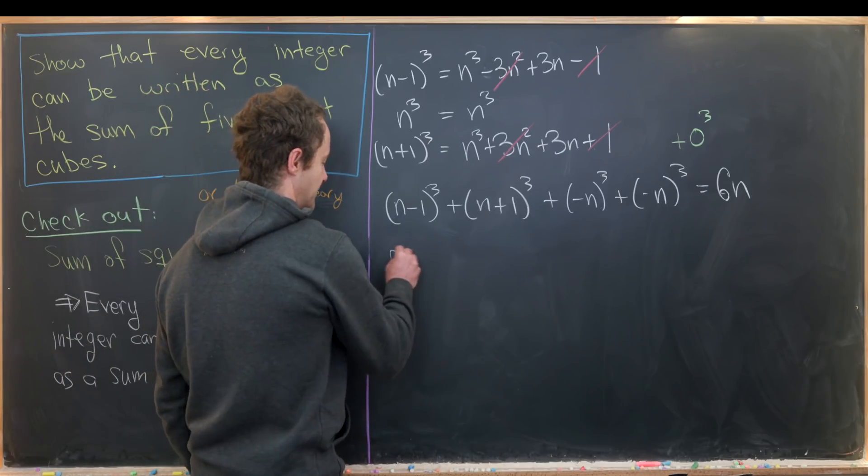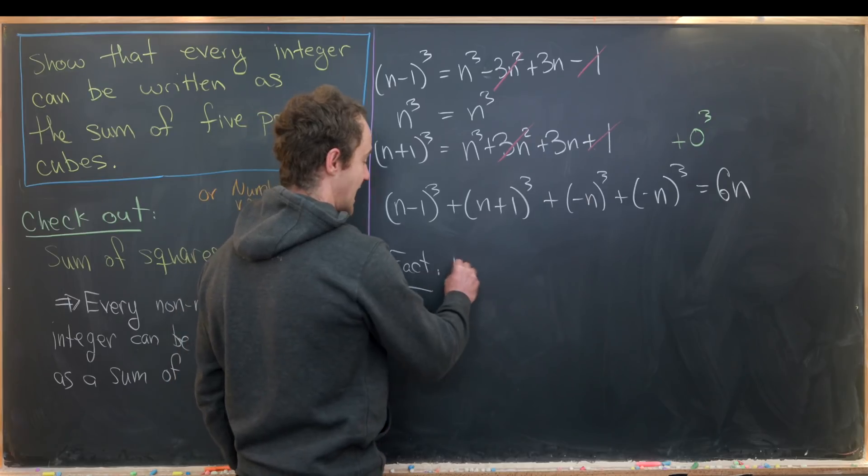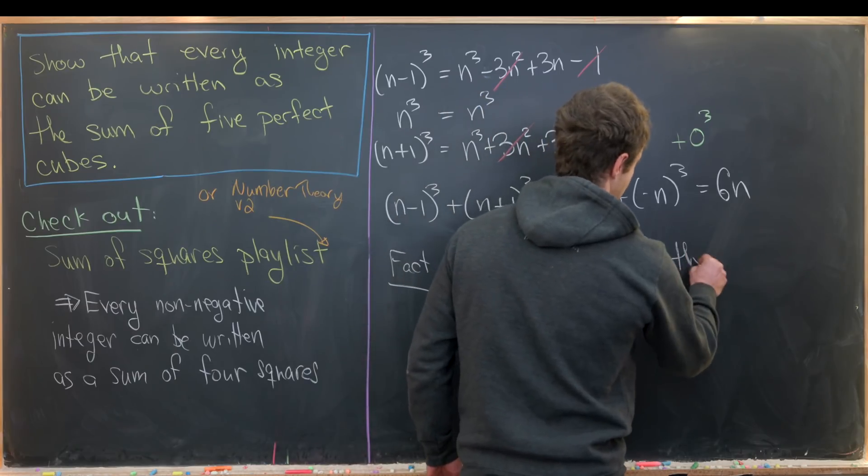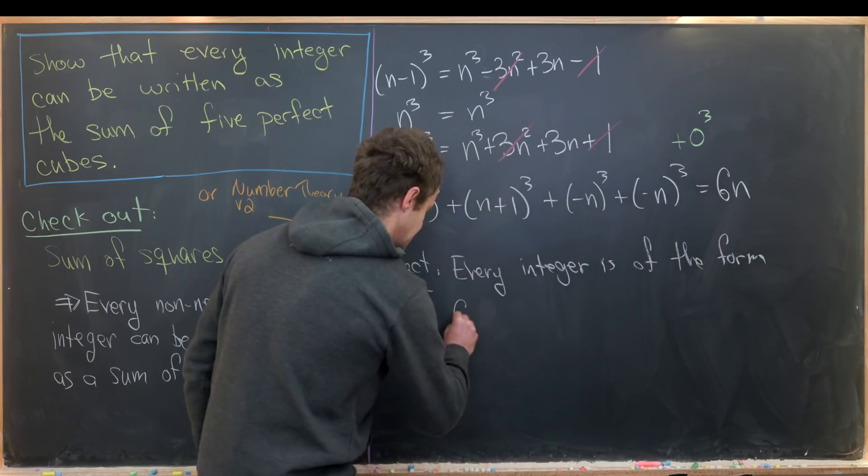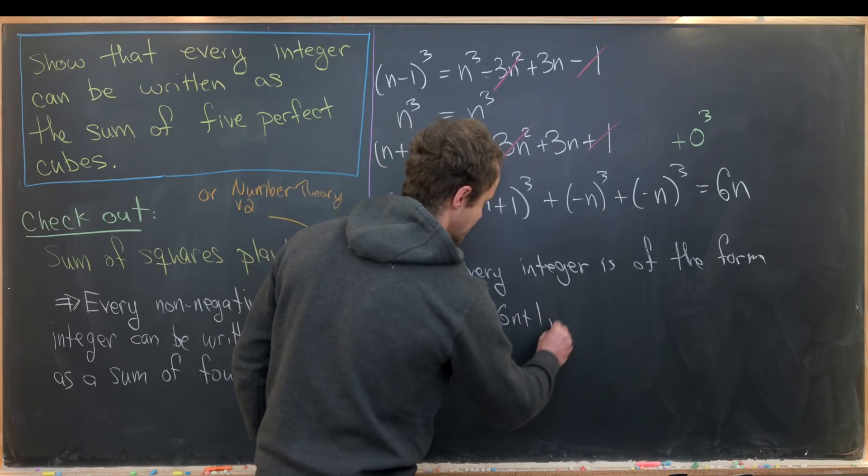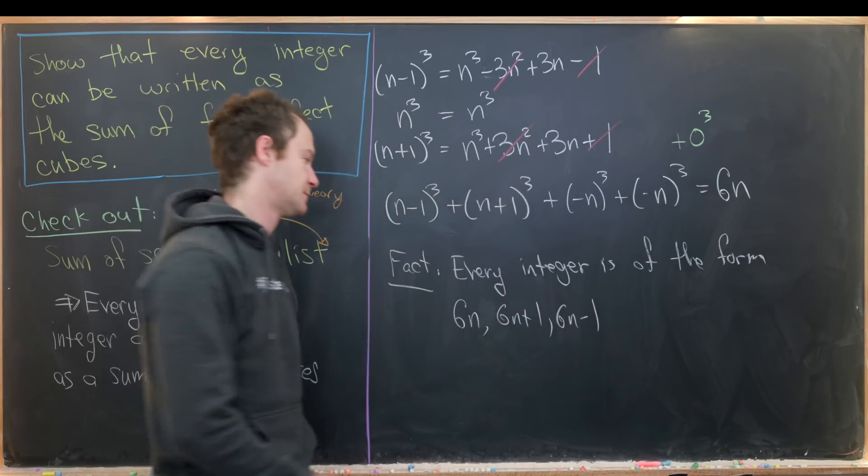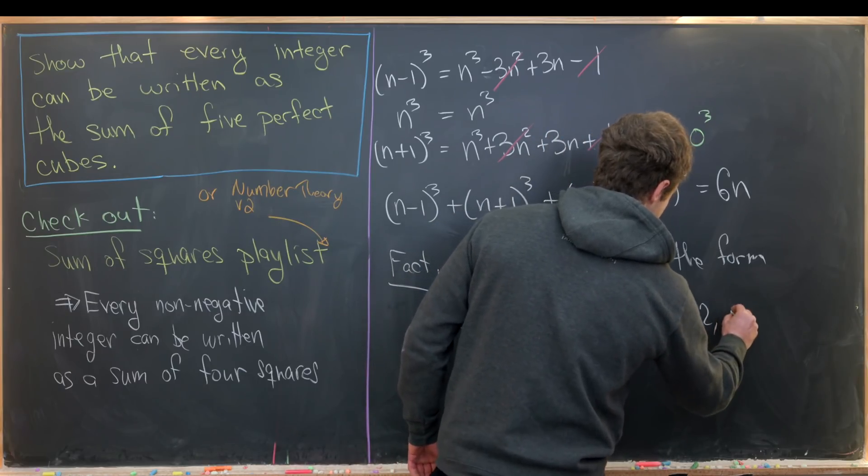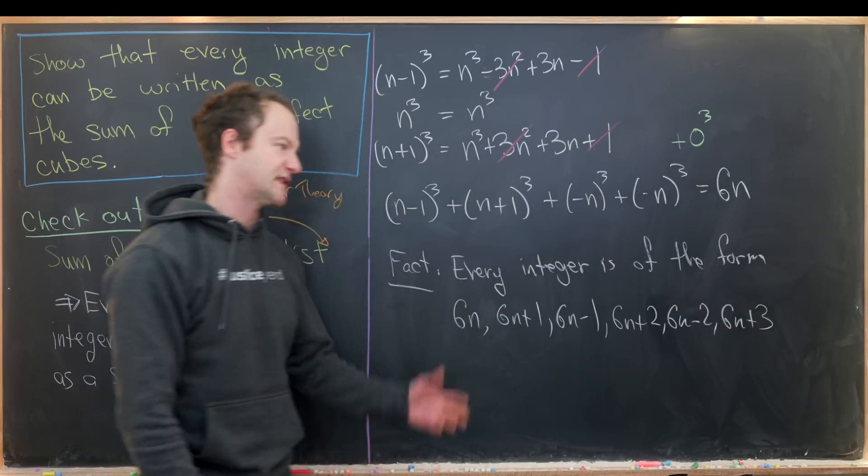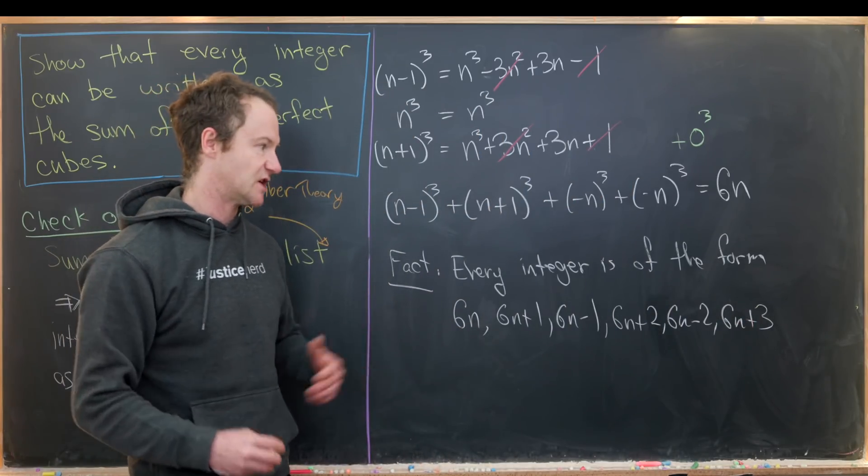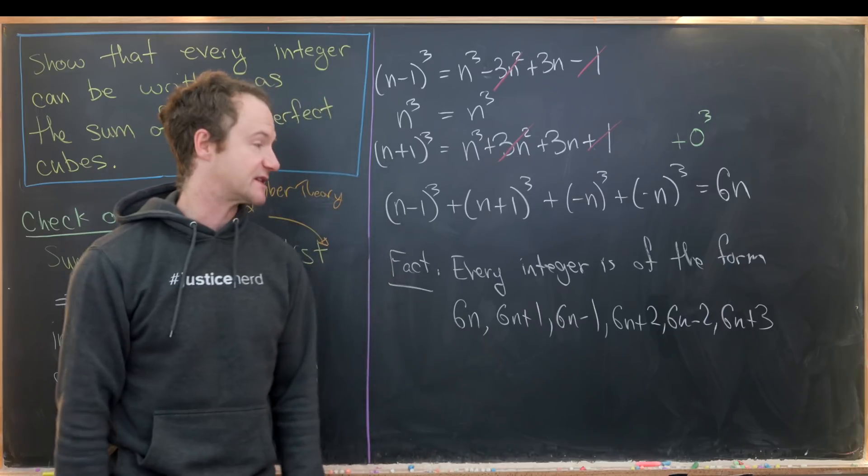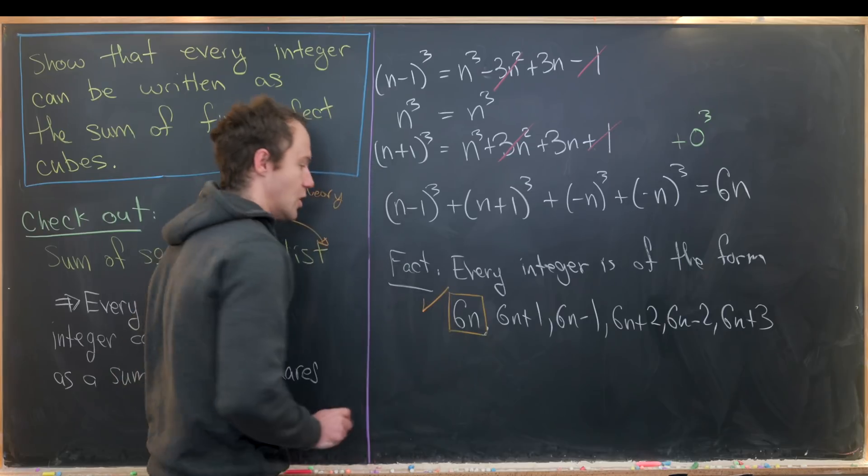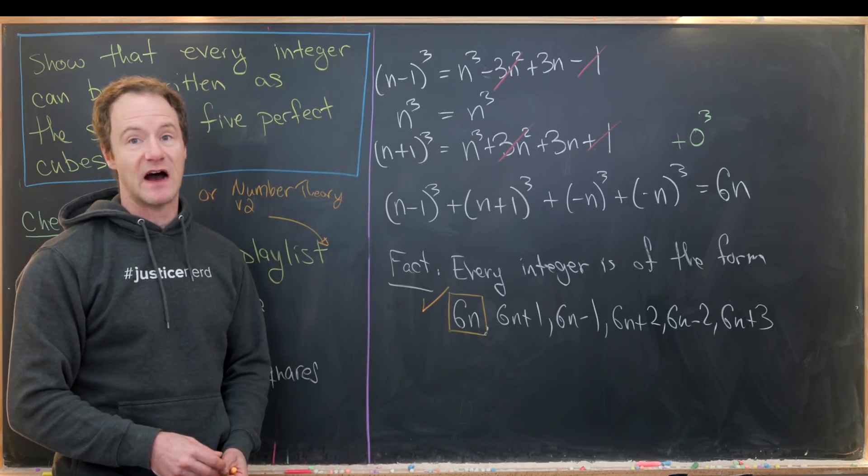That's going to be built off of the following fact: every integer is of the form 6n, 6n+1, 6n-1, 6n+2, 6n-2, or 6n+3. Notice that I don't need 6n-3 because I could just absorb that into the 6n and turn it into 6n+3. So far we've shown that if the integer takes this form we're okay, and we just need to work on the remaining five forms.